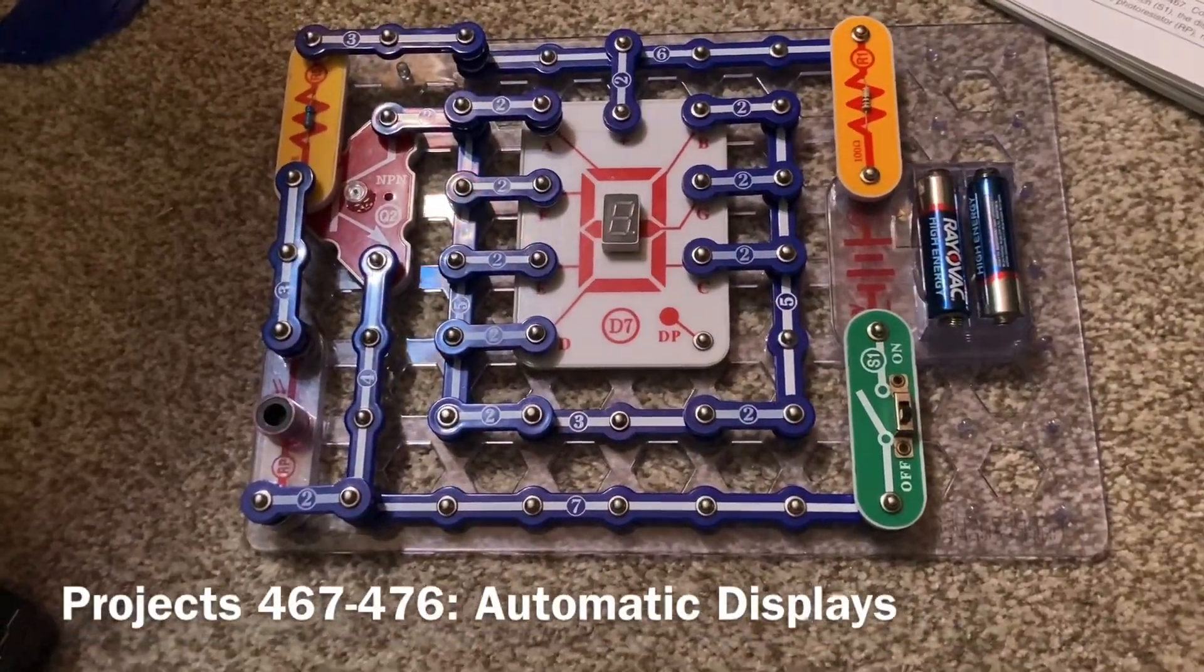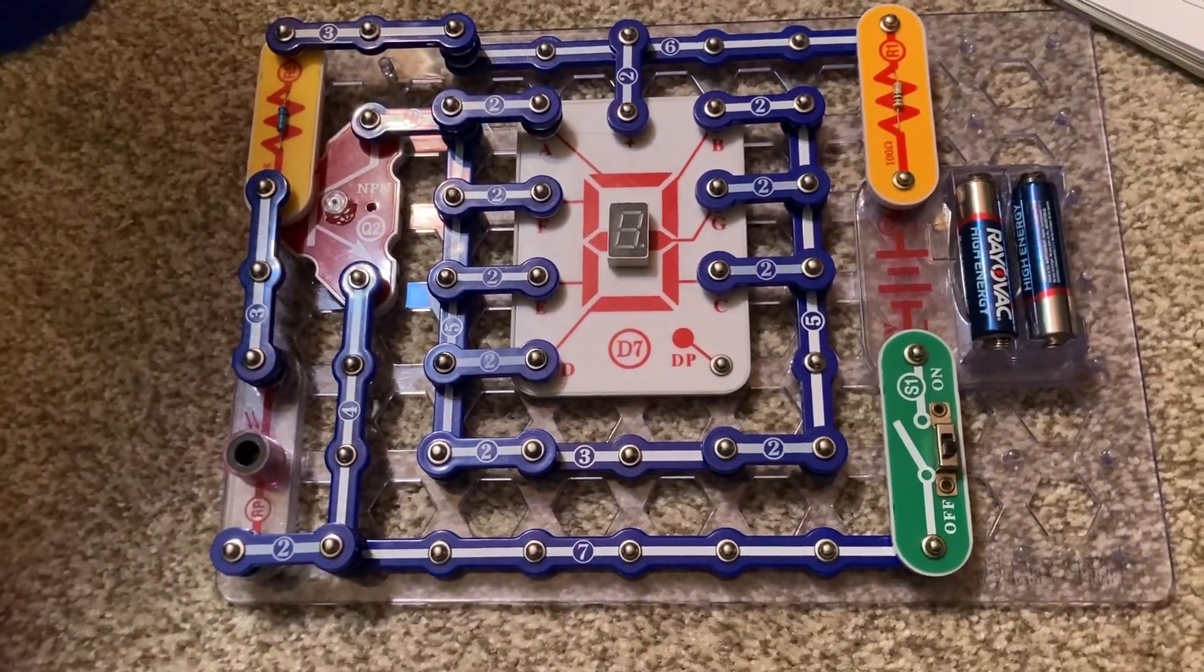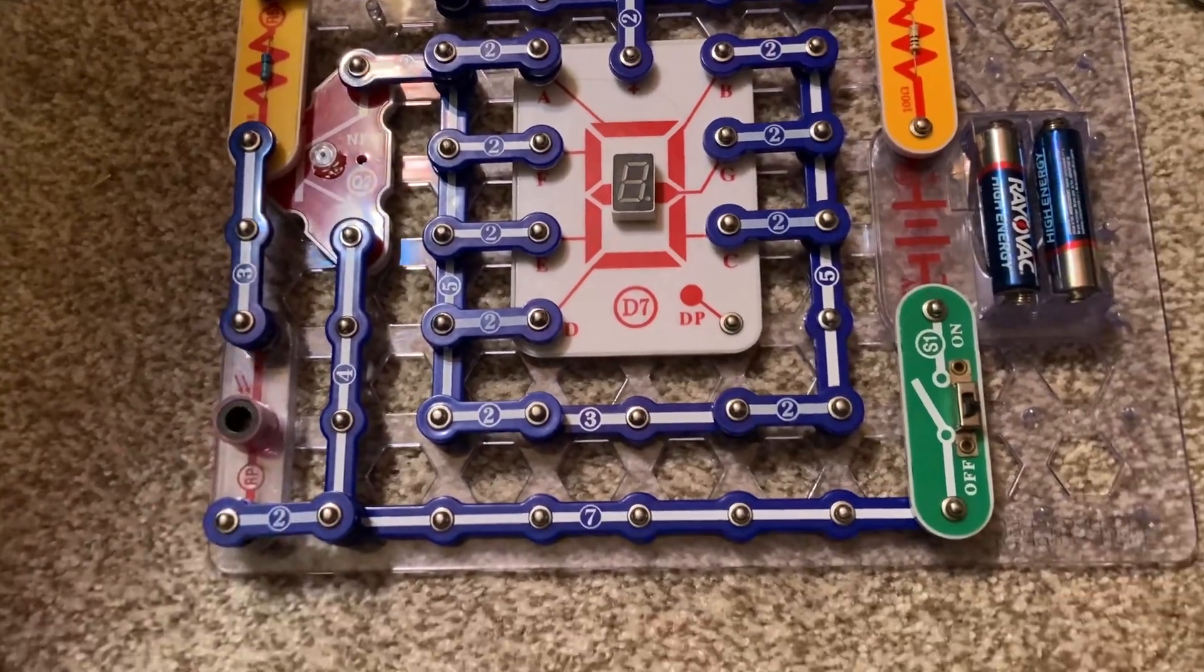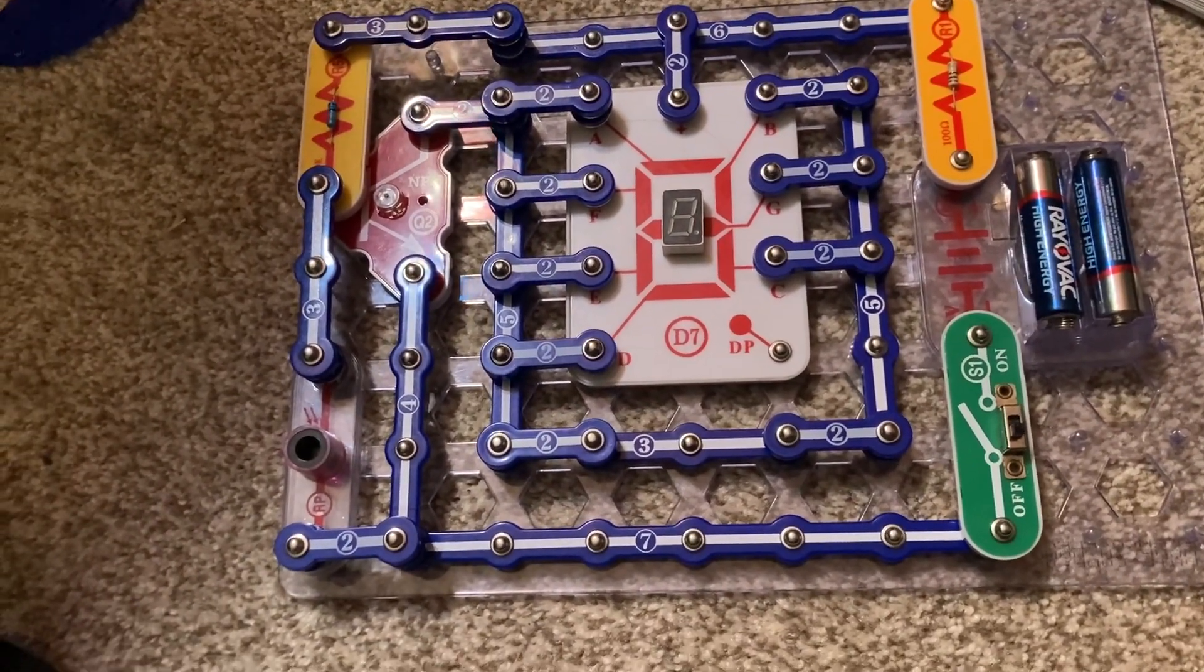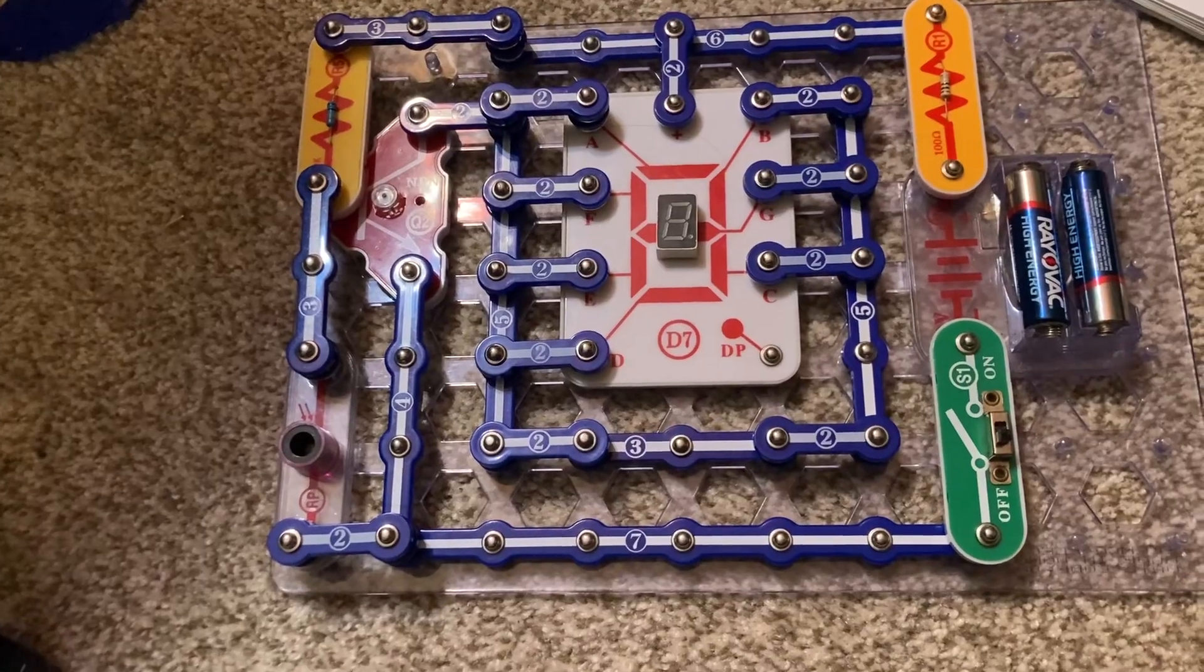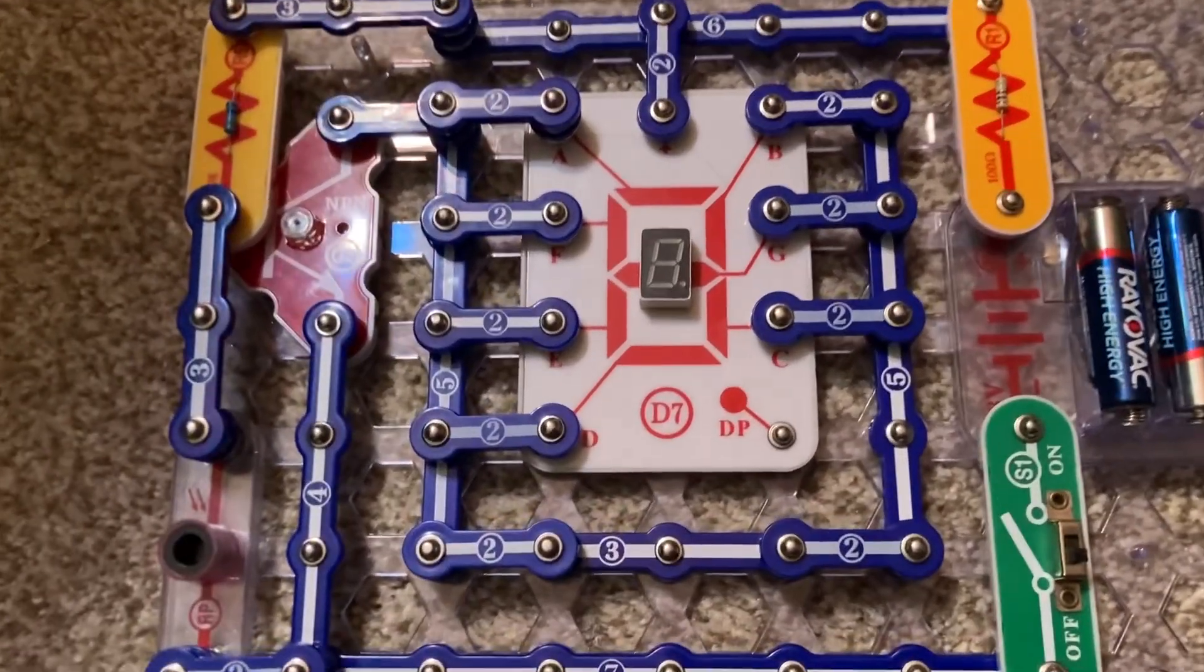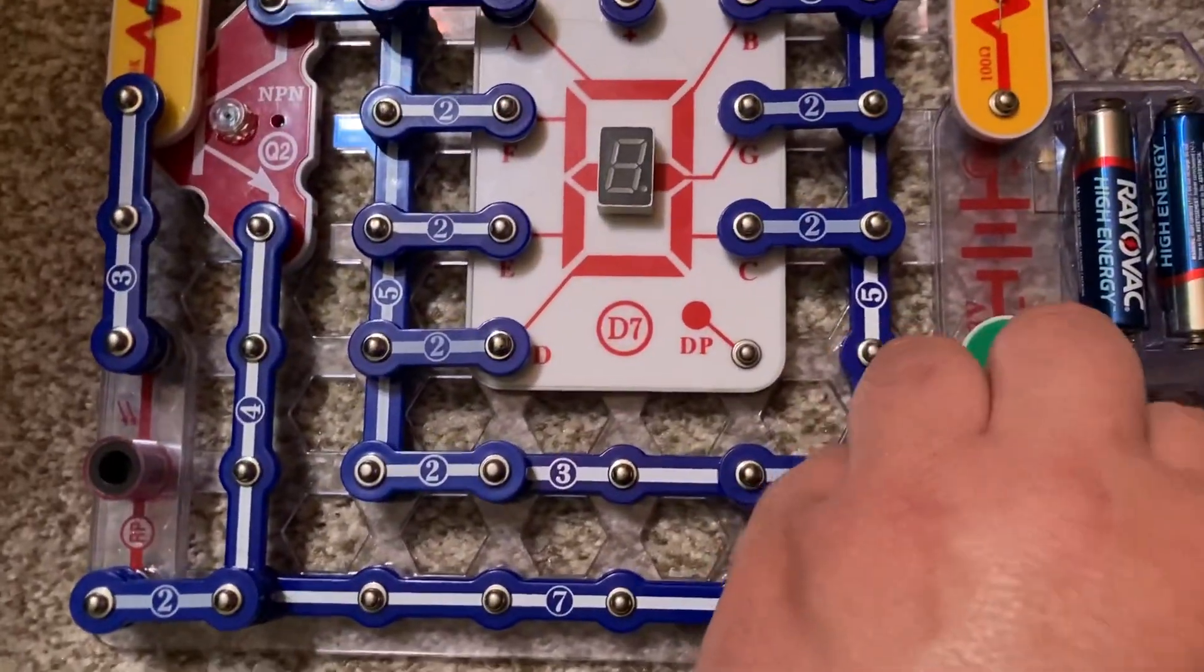The following 10 projects feature numbers on the seven segment display that are controlled by the photoresistor. When there is insufficient light on the sensor, the display will come on. When enough light hits the photoresistor, the display will turn off. I am not going to do all the numbers, but I'll show a few.